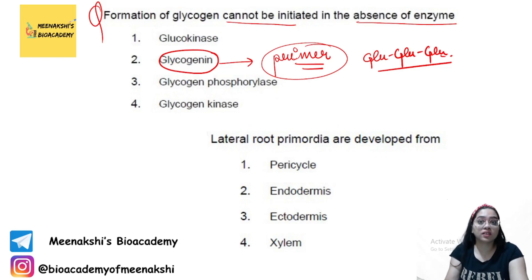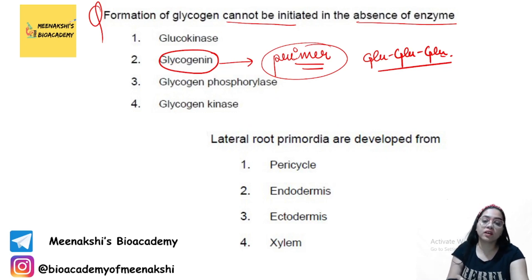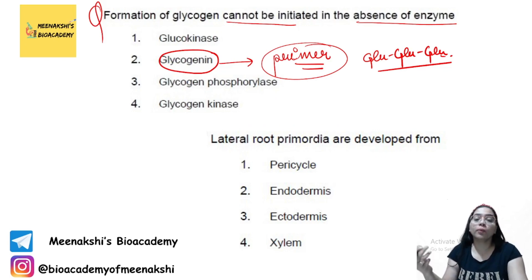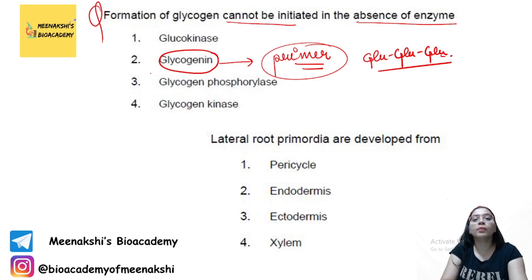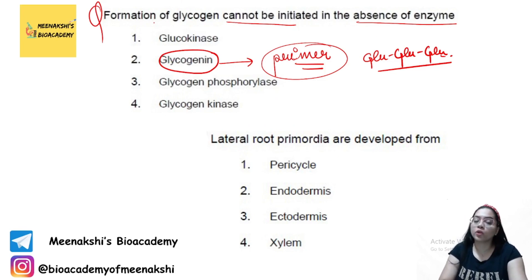Without glycogenin acting as a primer, glycogen synthesis is not possible — just like how synthesis cannot proceed without a primer. So the answer is option 2.